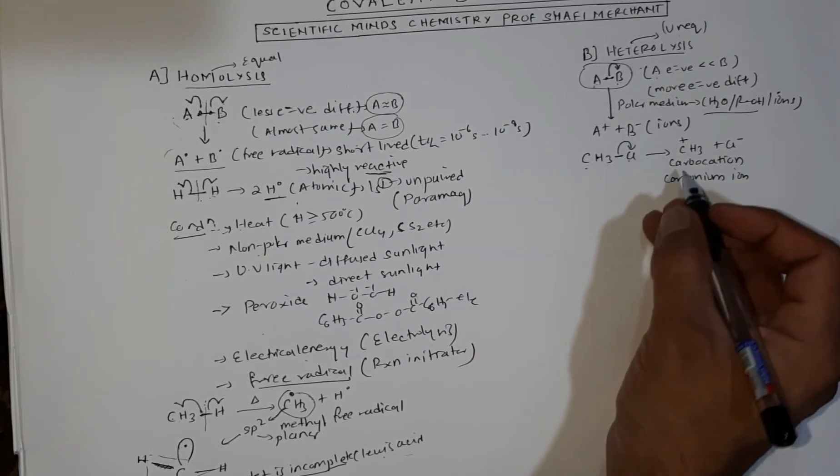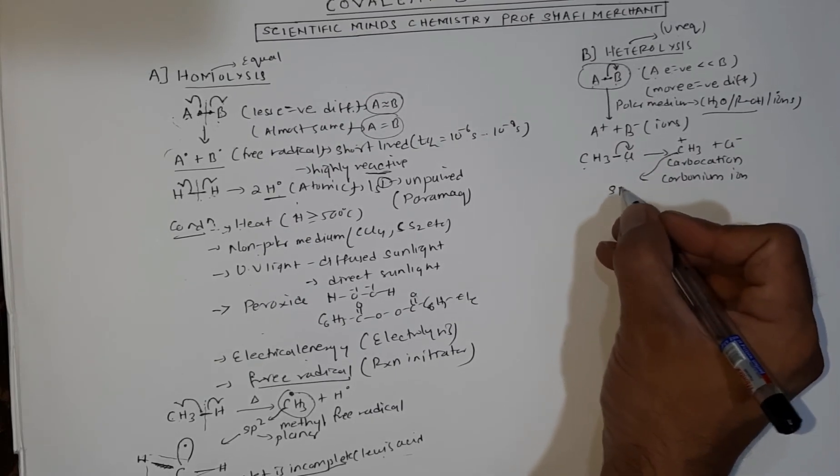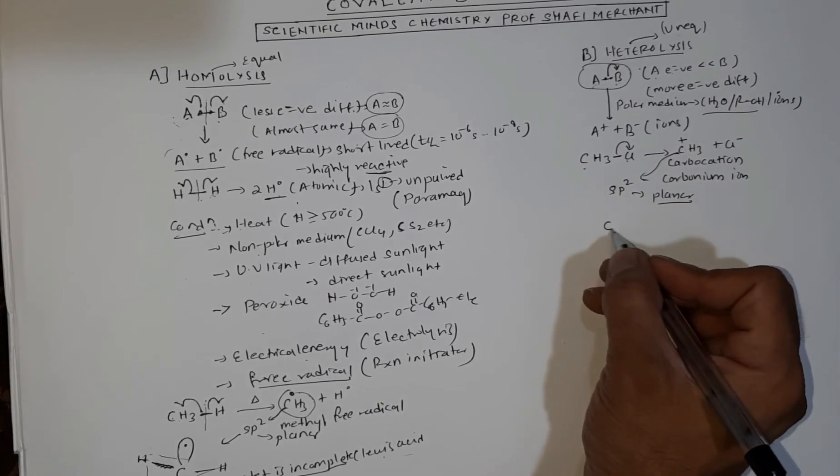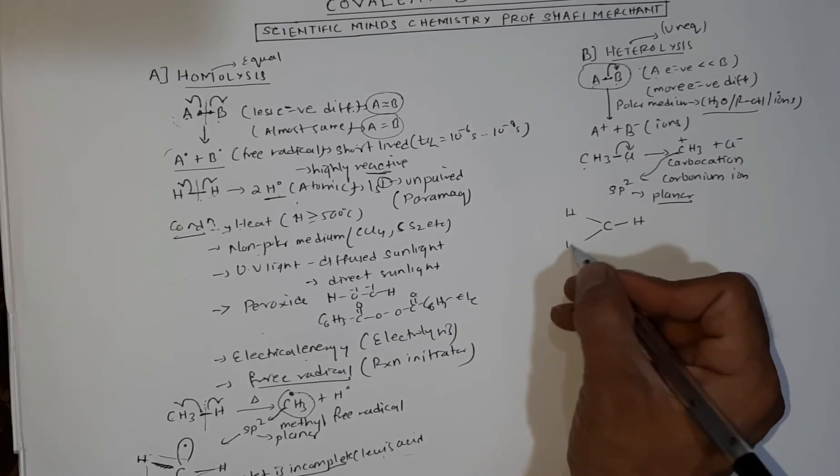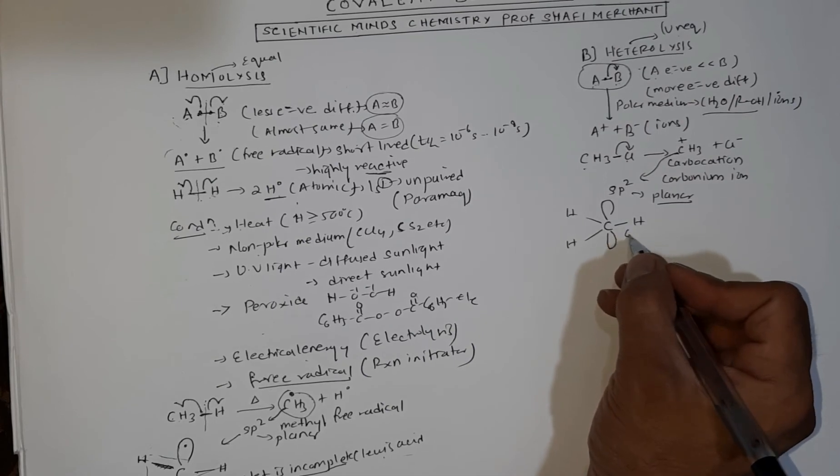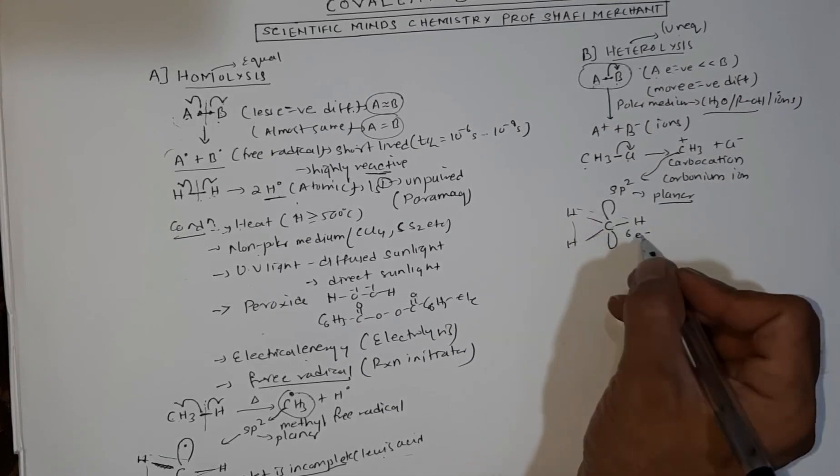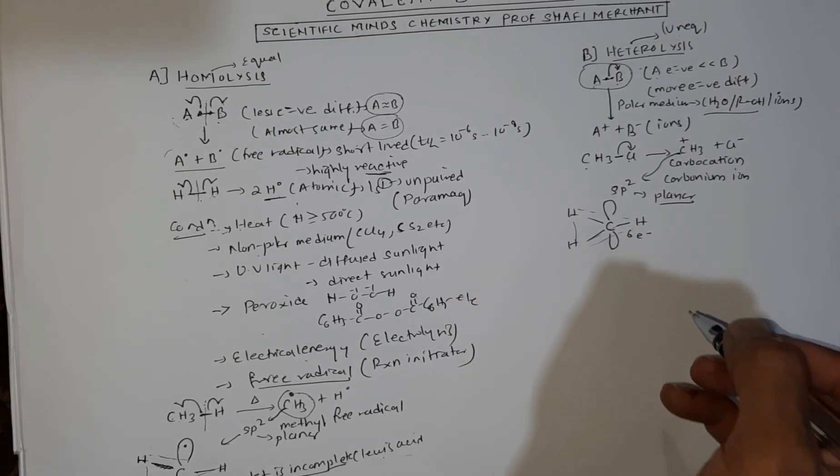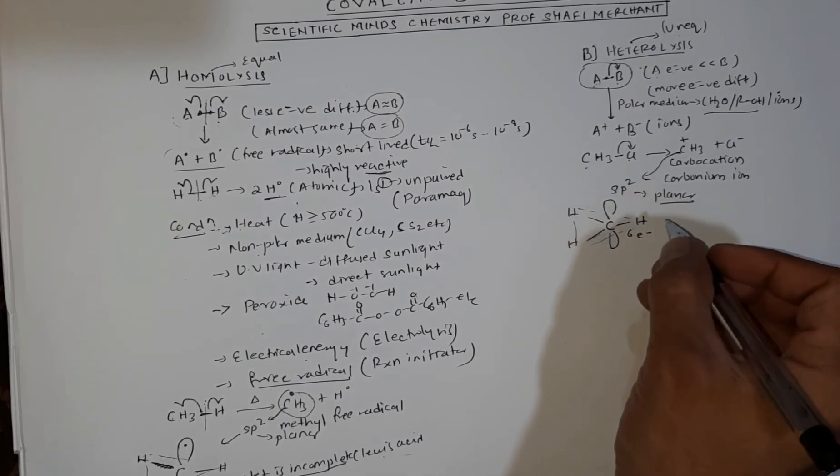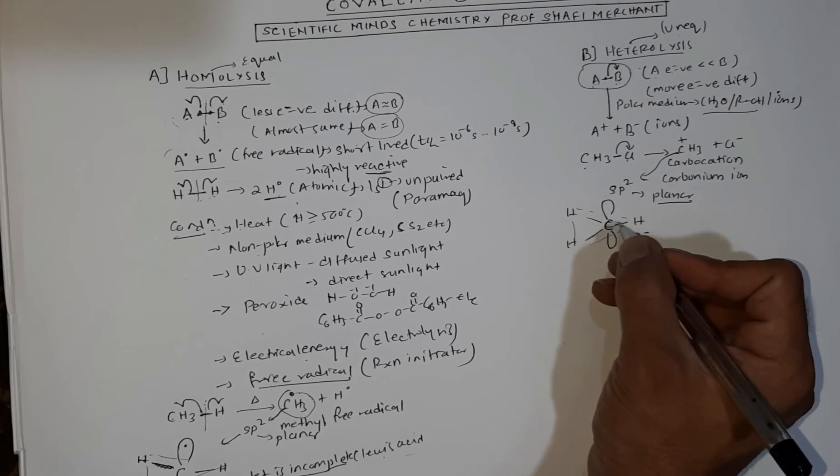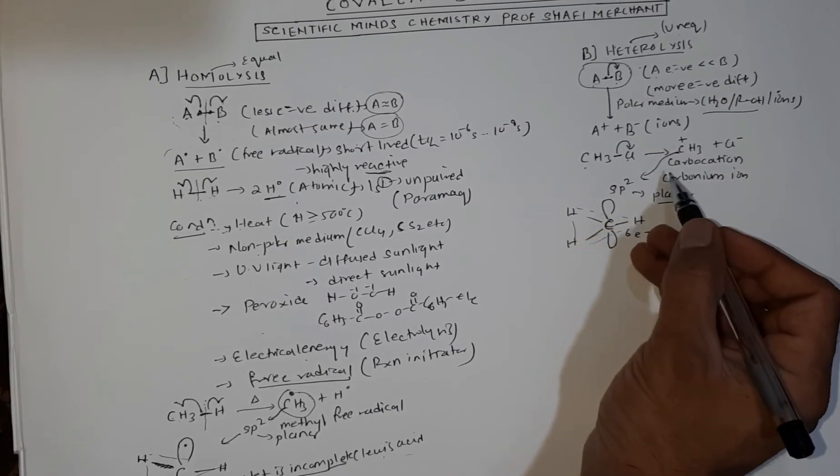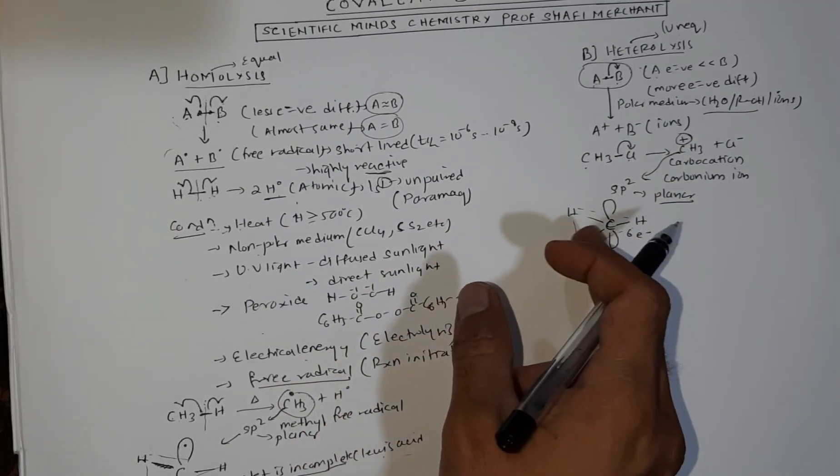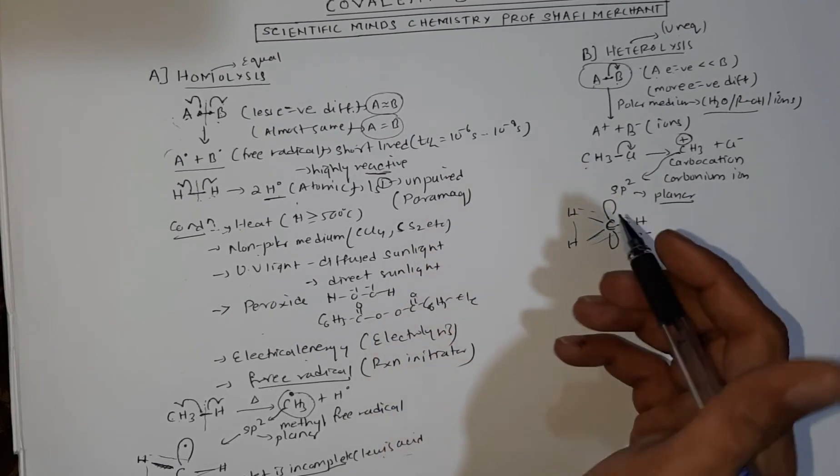It will form CH3+ and Cl-. This CH3+ is called carbon cation or carbonium ion. If we talk about this carbon cation, it is similar to free radical where the carbon is sp2 hybridized.